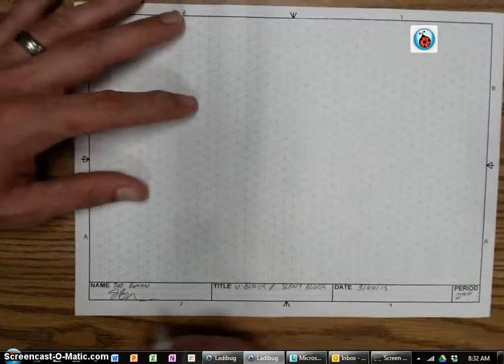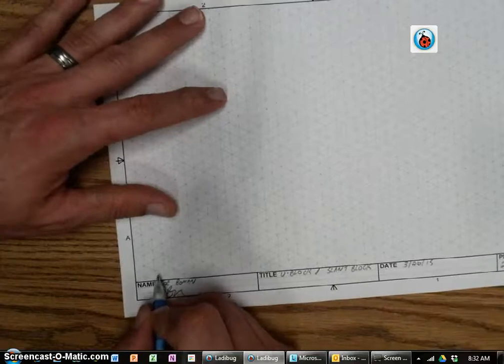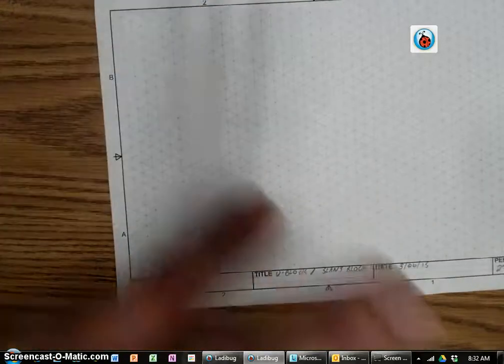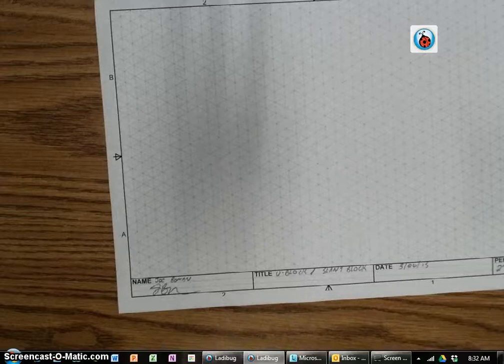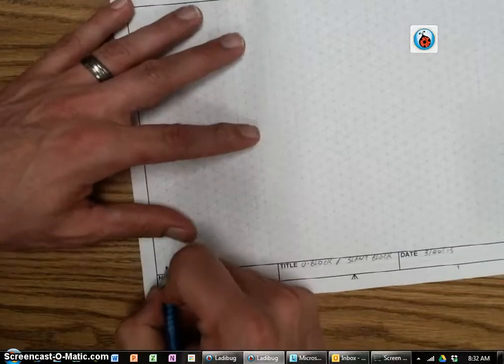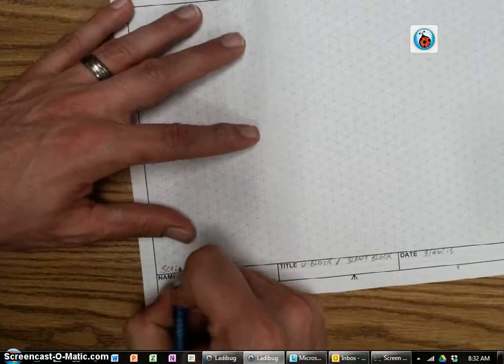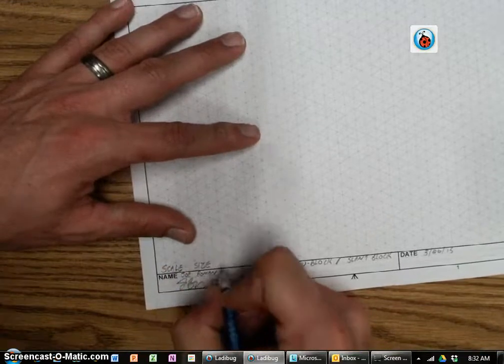Now the next step, after you have your title block filled out, your scale size. Remember, your scale size goes right above your name. The scale size is setting what your blocks are equal to compared to your inches. So right above your name, you're going to write scale size in all caps equals...